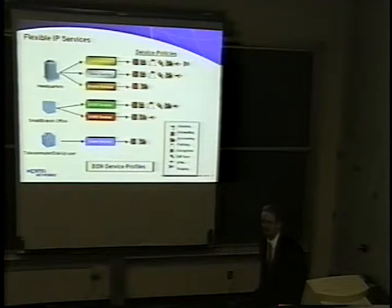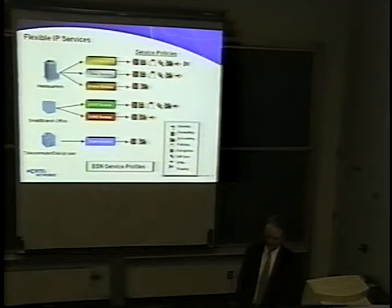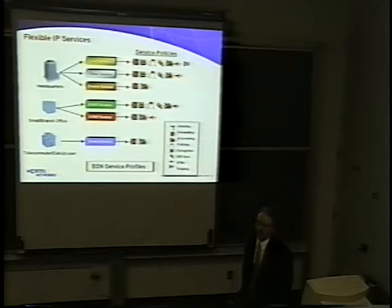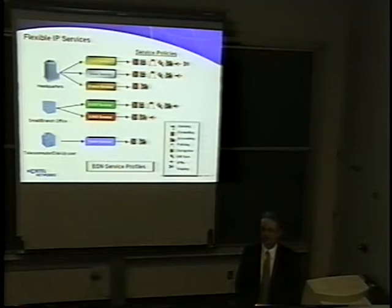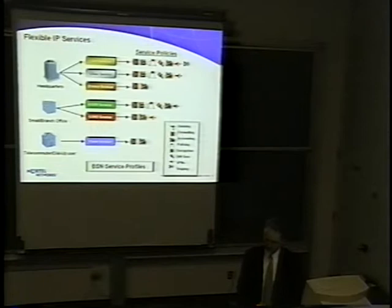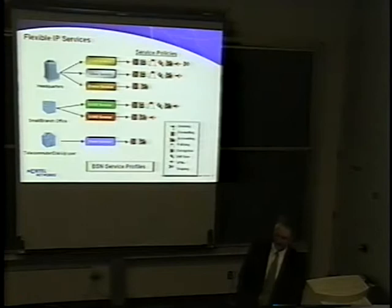What really differentiates a broadband service node from routers or remote access devices is the word 'service.' The concept of the BSN is to be more than a broadband remote access server — managing flexible IP services for all subscribers regardless of size. Whether it's a dormitory, military base, ISP subscribers, or ASP — each group will always have different unique service requirements. A broadband service node enables provisioning of these IP services logically without the need for separate external appliances for each subscriber. For instance, a small branch office may have a requirement for managing their own stateful firewall, and the parent organization can logically provision one for that branch office to manage on its own.